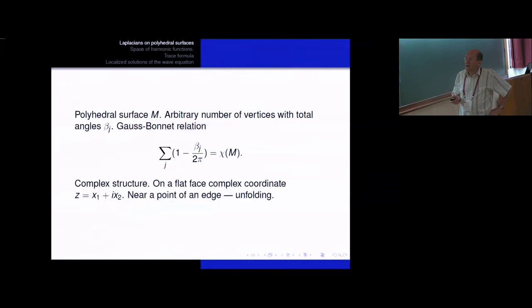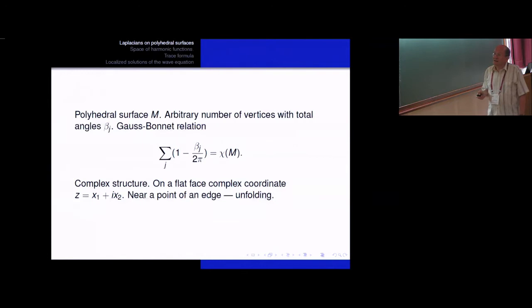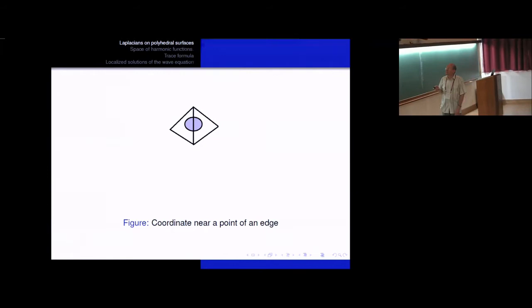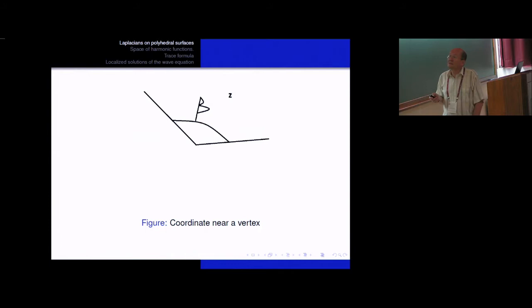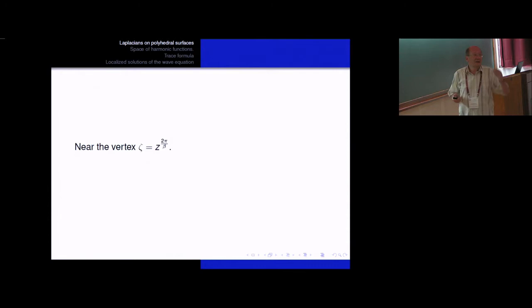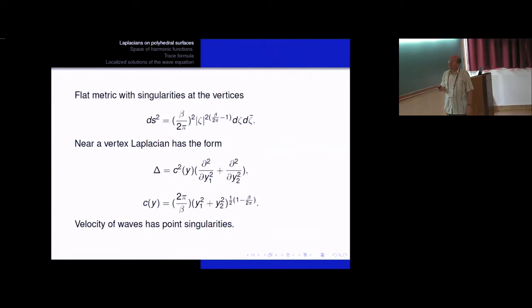The complex structure has a very natural form. If we consider a point on the face, it is a point of a two-dimensional plane and we can introduce standard complex coordinates. If we consider a point on the edge, we can unfold the vicinity of this point to the plane and introduce the same complex coordinate. The only problem appears at the vertex of the polyhedron — again we can unfold the vicinity of the vertex to the plane, but there will be not a full circle but some angle beta, which is the total angle near the vertex. So we introduce a complex analytic structure on such a polyhedron.